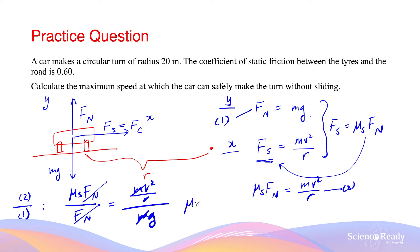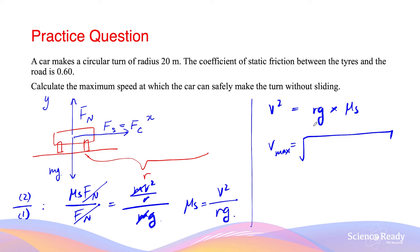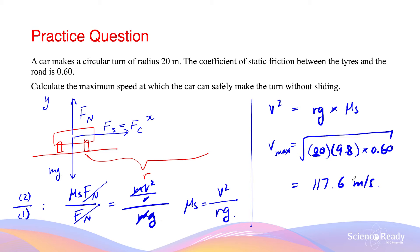Rearranging, v² = rg × μs, so the maximum speed vmax = √(r × g × μs) = √(20 × 9.8 × 0.6) = √117.6 ≈ 10.84 m/s. This is the maximum velocity at which the car can travel. If the vehicle travels any faster than this speed, it will slide off and be unable to make it around the circular bend.